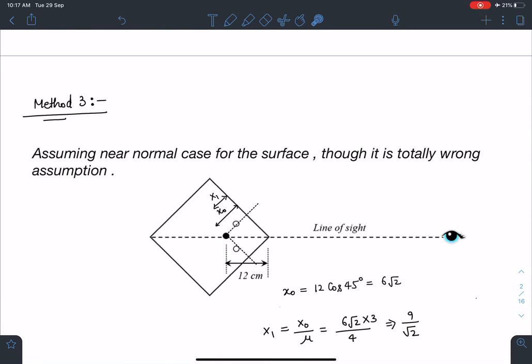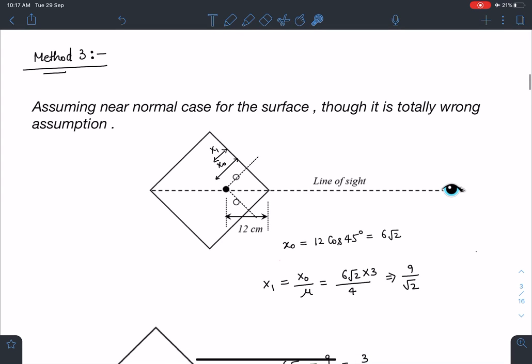So let's see how JEE will respond to it and let's discuss the third approach also, third method. This is most likely what JEE people have thought and that's where it has gone wrong. So method 3 is assuming near normal case for the surface though it is totally wrong assumption. I have described these reasons above.